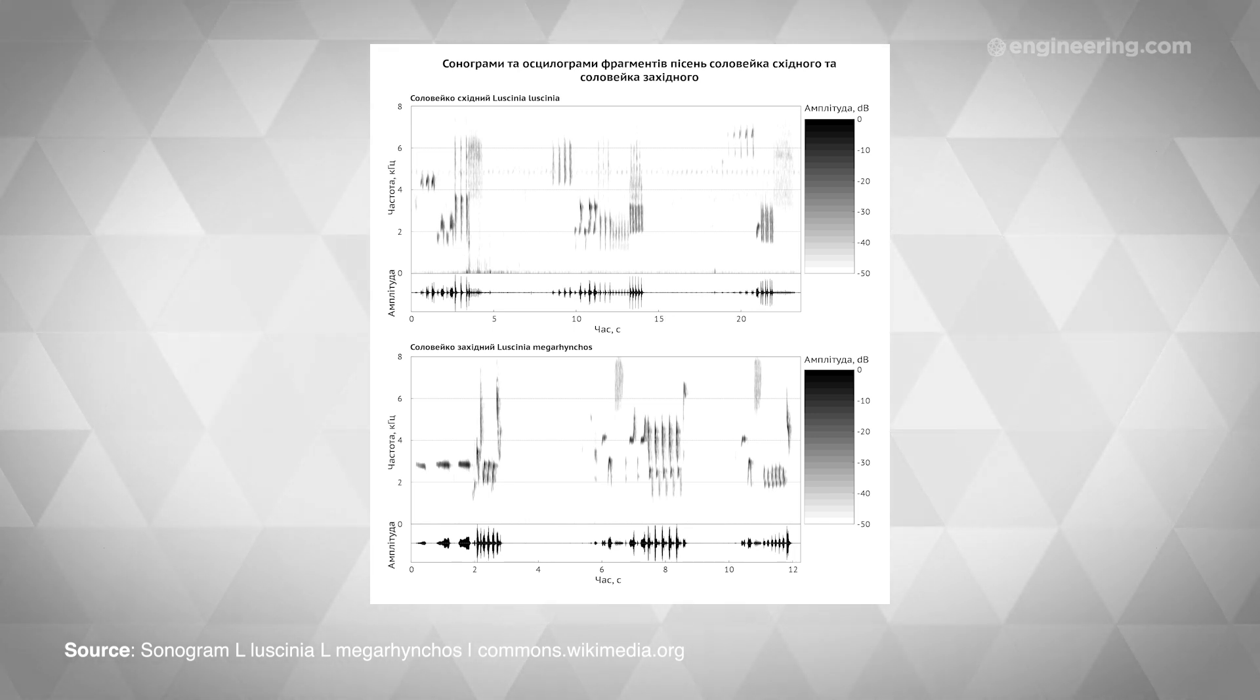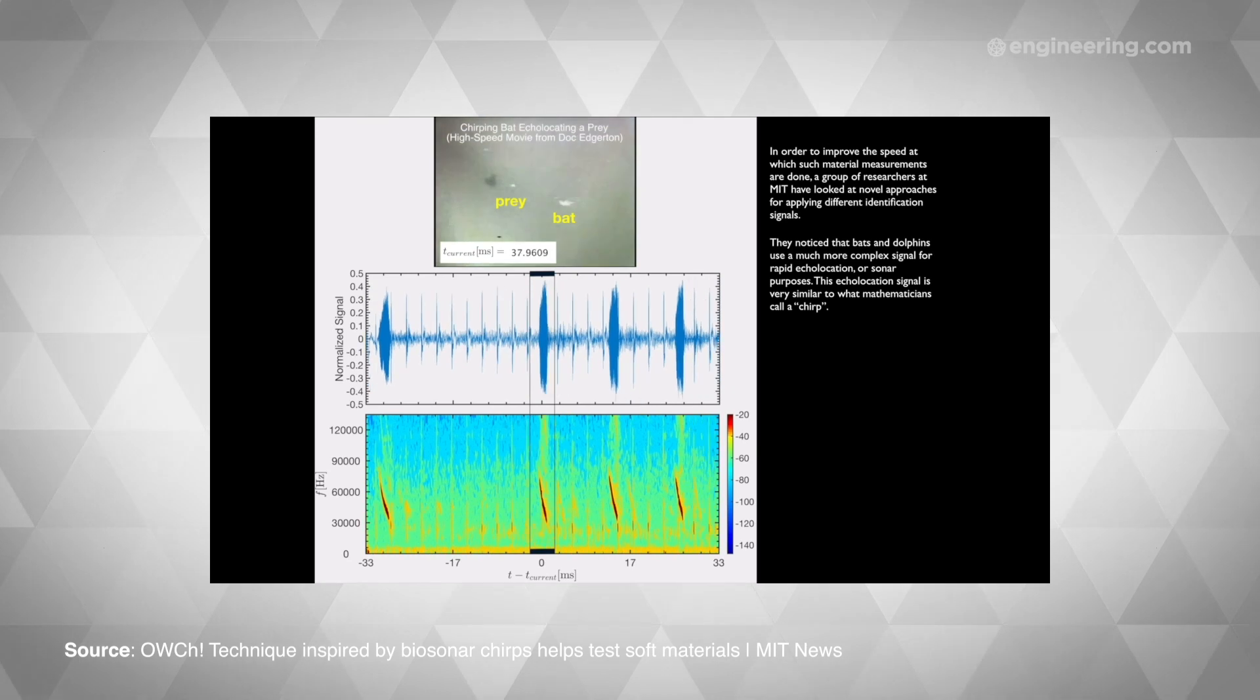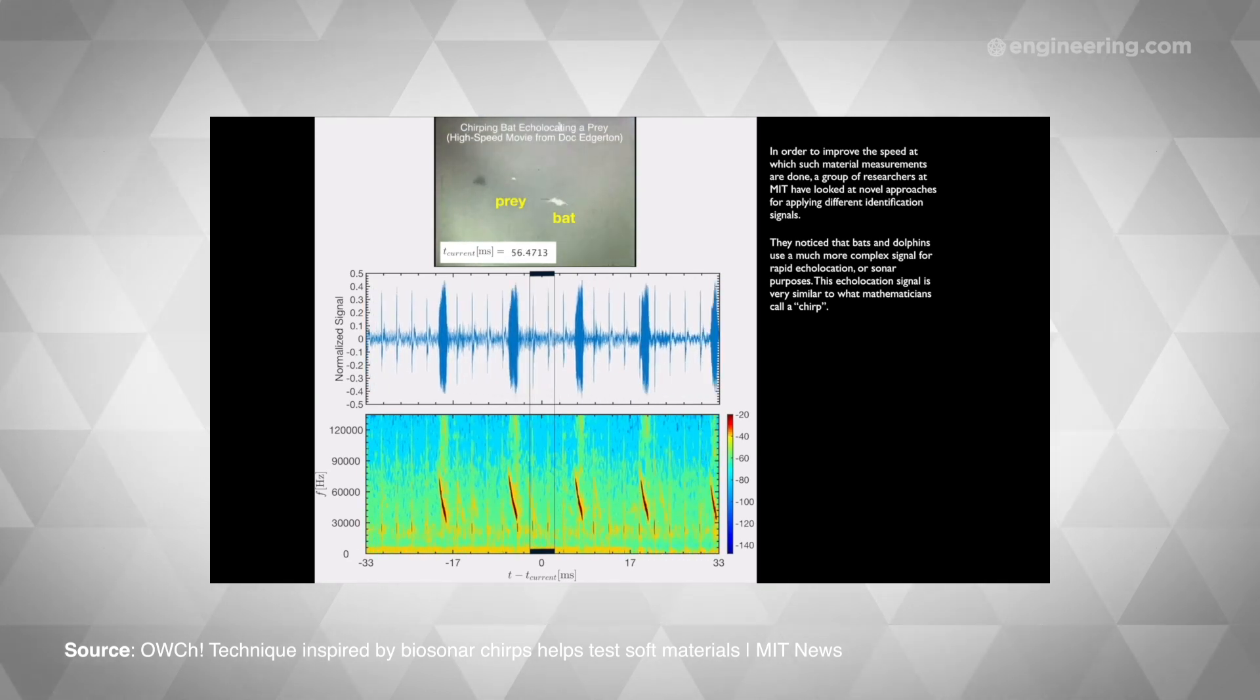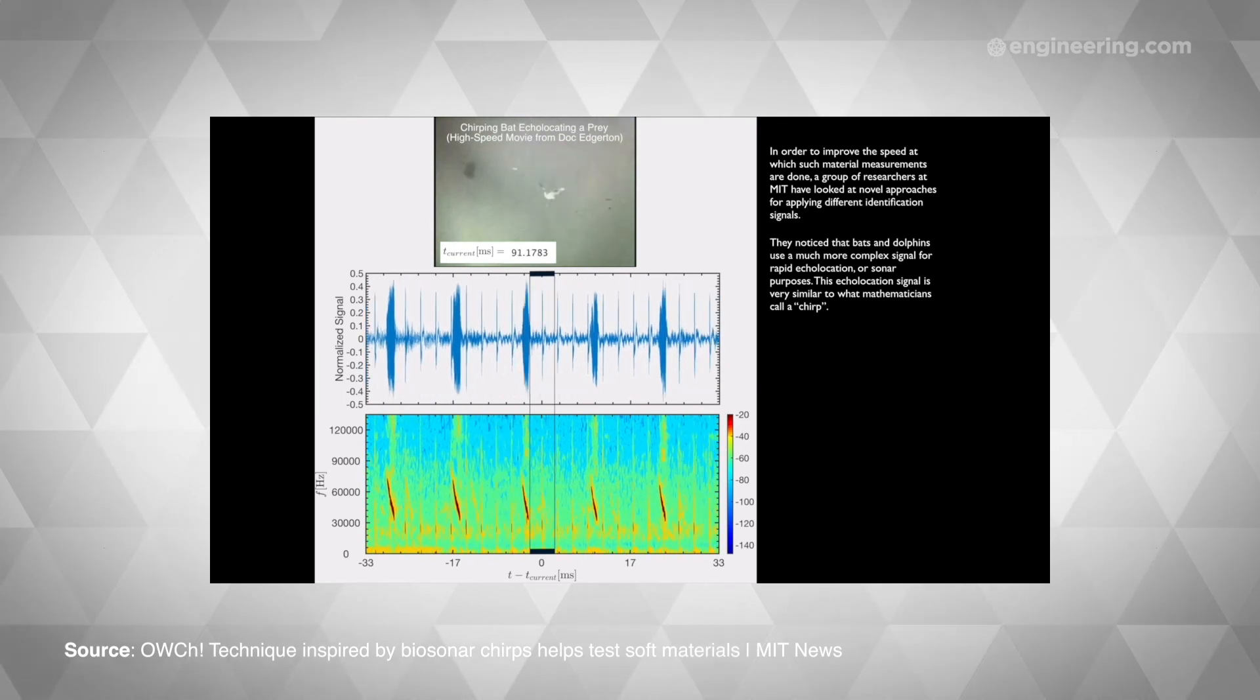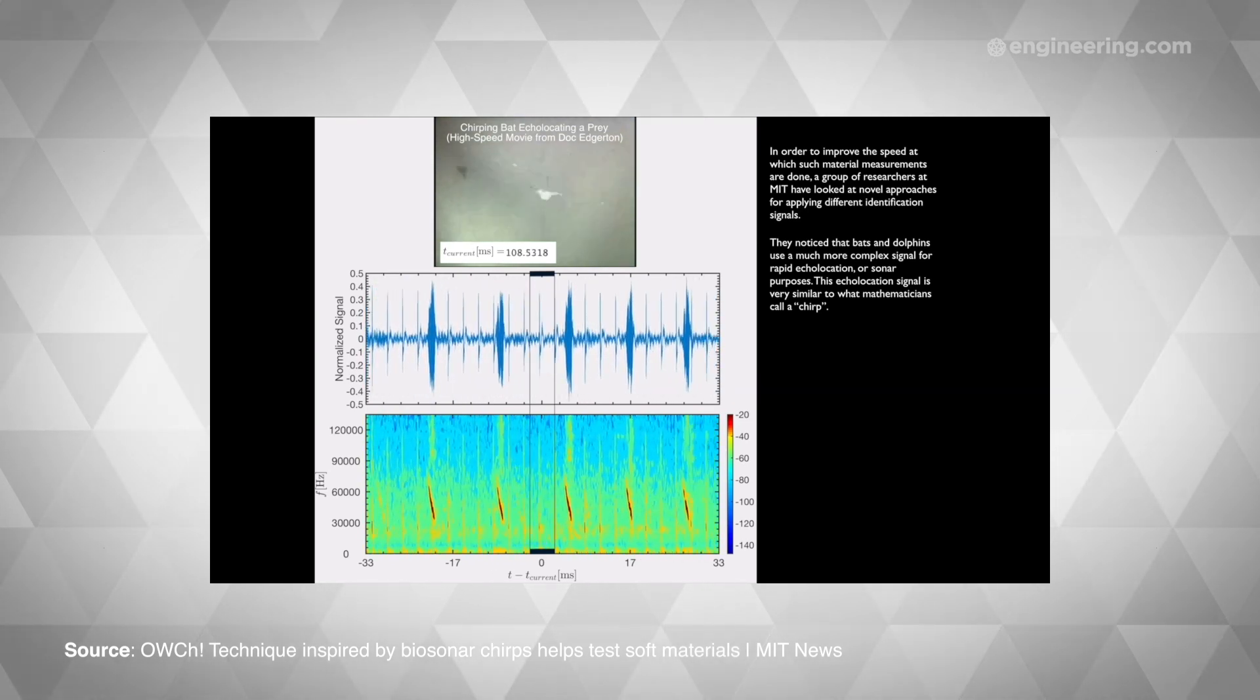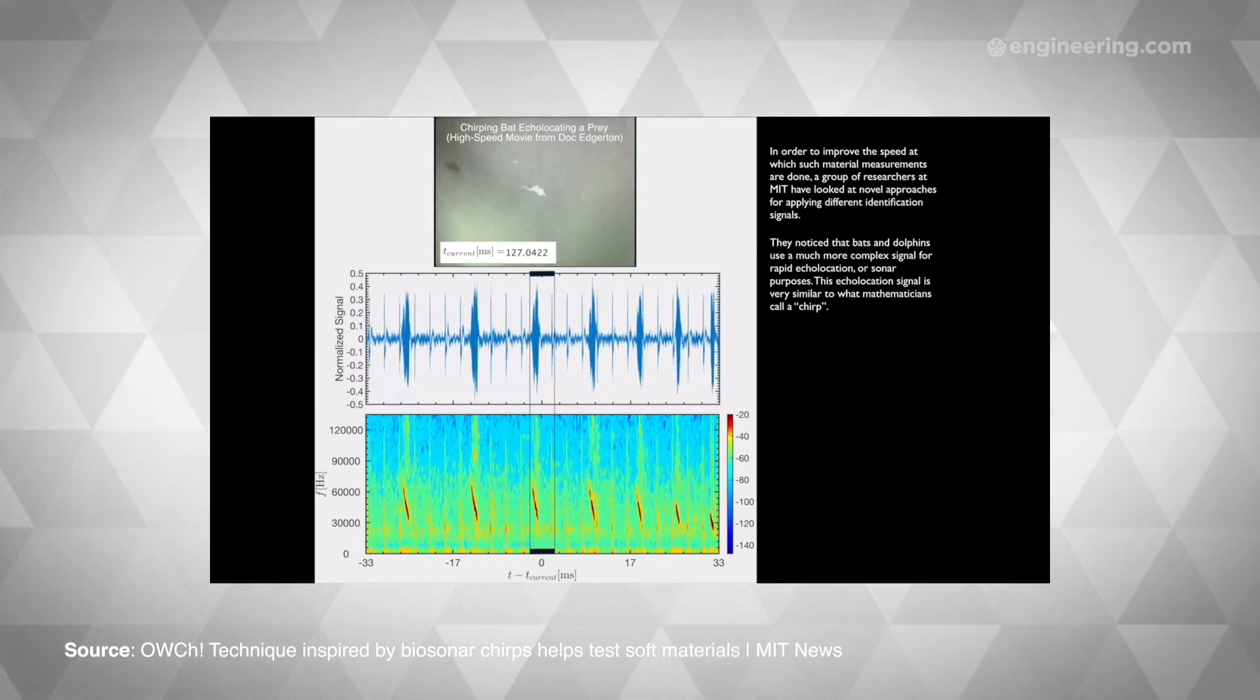The chirp profile significantly speeds up testing, enabling a modified rheometer to measure in 10 to 20 seconds what would take an unmodified device 45 minutes. Unfortunately, the chirp approach also proved to be less accurate, which is why the MIT team turned to bats and dolphins for inspiration.